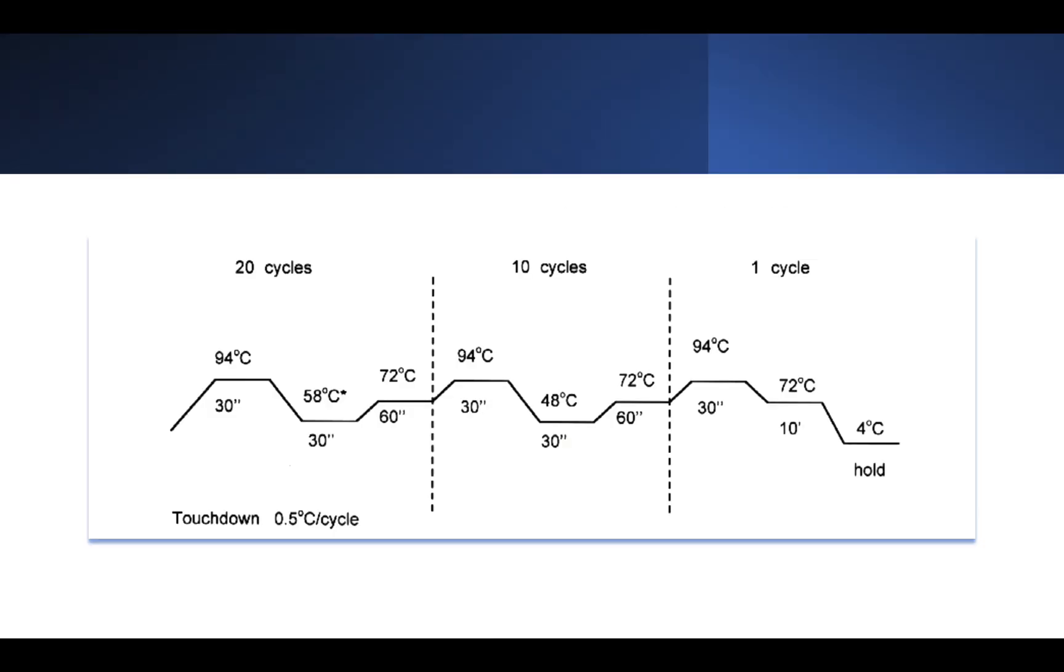This would be a little easier to understand by example. So this is an example of a touchdown PCR program. Here in the first phase, you can see that the reaction is carried for 20 cycles, where in the annealing stage the annealing temperature is decreased by half a degree every cycle. So at the end of this first phase, the annealing temperature would be 48 degrees Celsius.